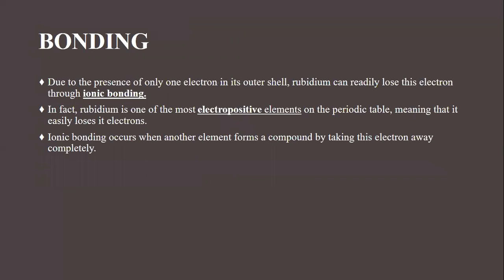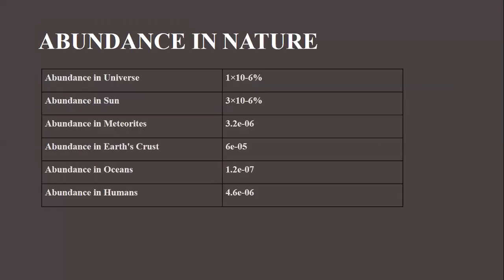Next, we have bonding. What type of bond does rubidium form? Rubidium forms ionic bonding because it has only one electron in its outer shell and can easily lose that electron. In fact, rubidium is one of the most electropositive elements in the periodic table, meaning it can easily lose its electron. Ionic bonding occurs when one element forms a compound with another by transferring this electron completely.